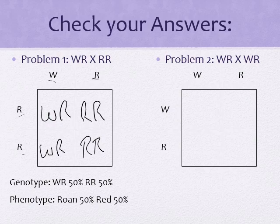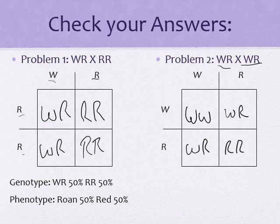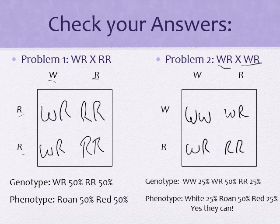In the next one, we cross two roan individuals. The question was: can we get roan offspring? Our Punnett square gives us: WW, WR, WR, and RR. So our genotypes are 25% WW, 50% WR, and 25% RR. The phenotypes would be 25% white, 50% roan, and 25% red. So simply put, could two roan individuals cross and have a roan calf? Yes, they can.